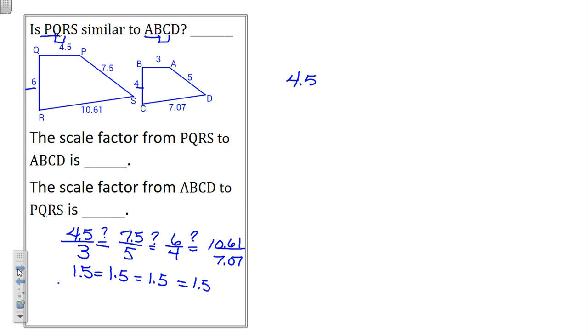Divide top by bottom, see what you get for a decimal. Compare it to the next one, compare it to the next one, compare it to the next one. If you get the same number all the way, we know they're proportional. If we don't, then we say not similar. Not too bad, right? So are they similar? Yes.